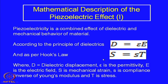We know Hooke's law, where stress and strain are related by Young's modulus. Here, the Hooke's law is written in a slightly inverse manner: S = s·T, where capital S is the strain, capital T is the stress, and small s is the compliance — the inverse of Young's modulus. So this proportionality constant s is known as the compliance, which is the inverse of Young's modulus.